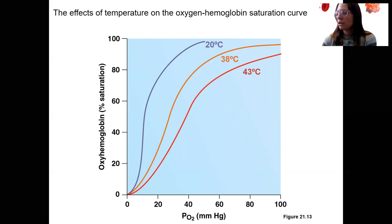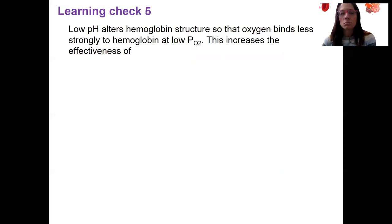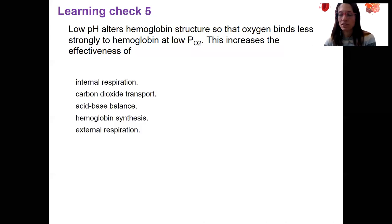Okay. Learning check for you here. Low pH alters hemoglobin structure, so oxygen binds less strongly to hemoglobin at the same, at a given PO2. This is going to increase the effectiveness of what? Low pH alters hemoglobin, so oxygen won't...